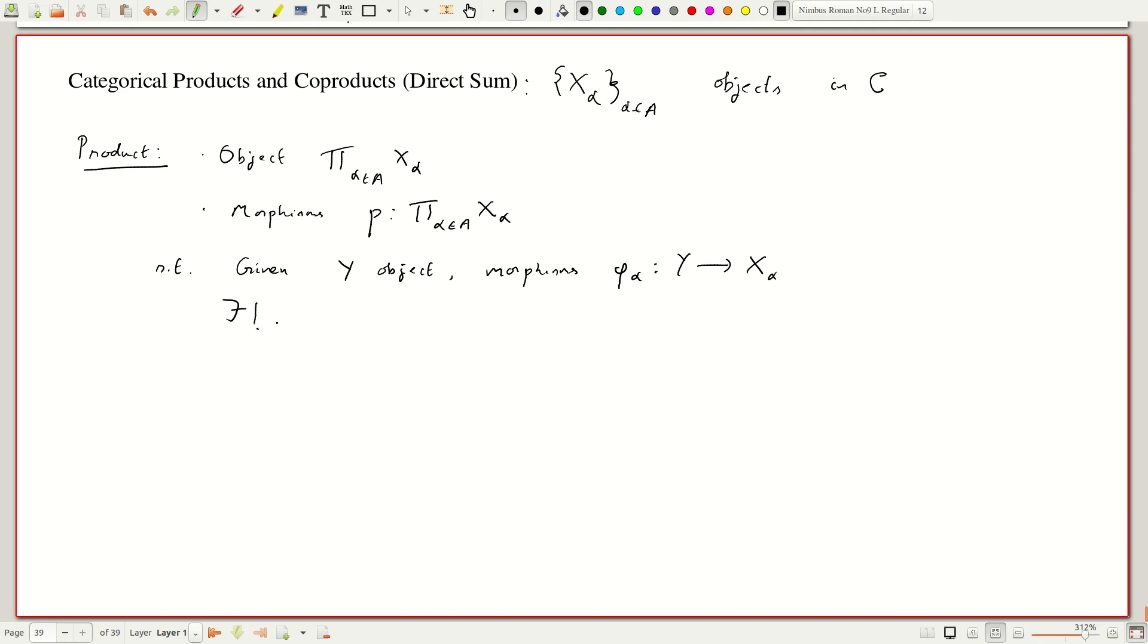There exists a unique morphism, capital Phi, mapping Y to the product of x_alpha such that some appropriate diagram commutes. Namely if I have Y then I can go by Phi to the product of x_alpha and then I project to x_alpha and I have the map phi_alpha.